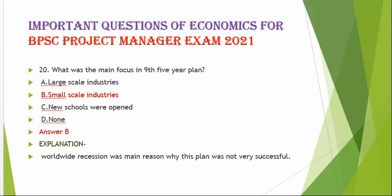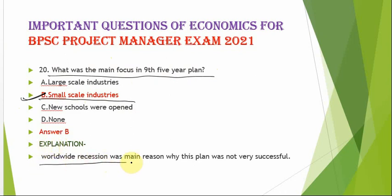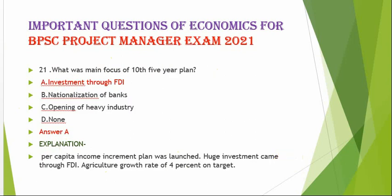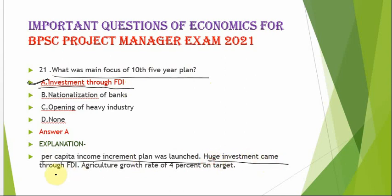The next question is: what was the main focus of the Tenth Five Year Plan? The correct option is option A — investment through FDI. A per capita income increment plan was launched and huge investment came through FDI. The agricultural growth rate target was 4%. The main focus of the Tenth Five Year Plan was investment through FDI.